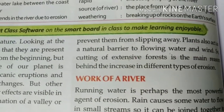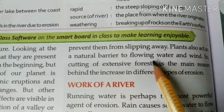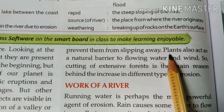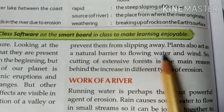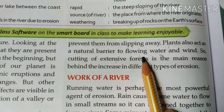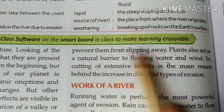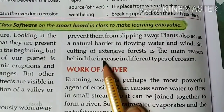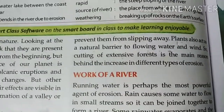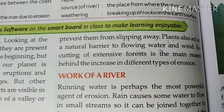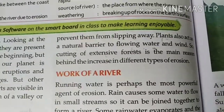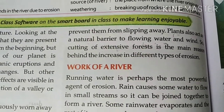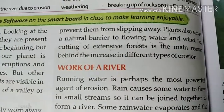Plants are natural barriers to flowing water. If water flows through an area where plants grow, the plants slow down the water flow. So if there are plantations or trees, the water flow is reduced. However, if we do extensive cutting of forests, then erosion is high and increases.